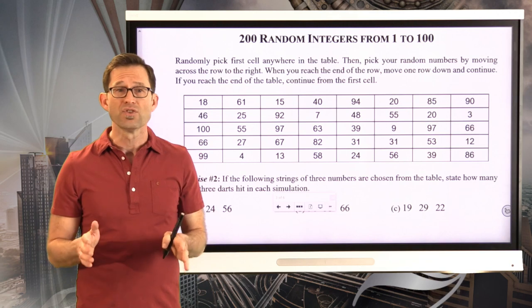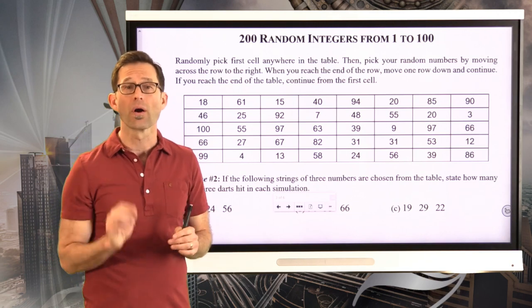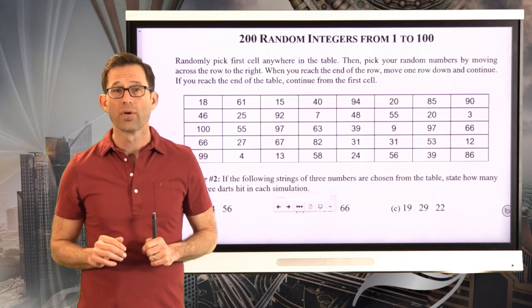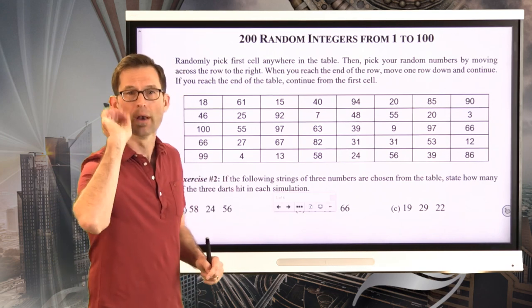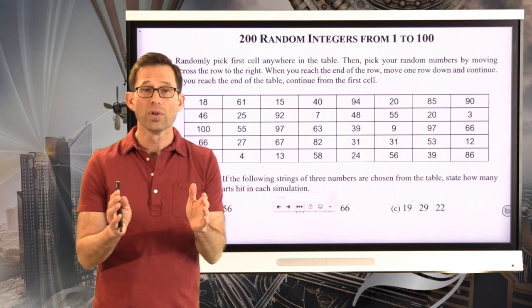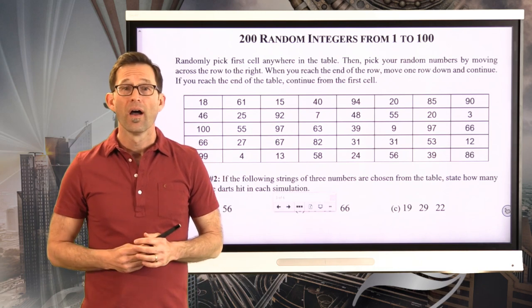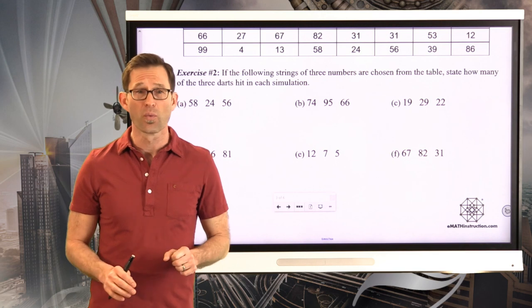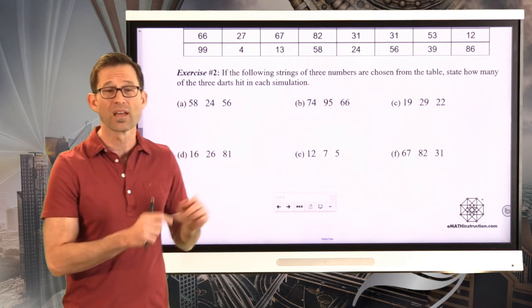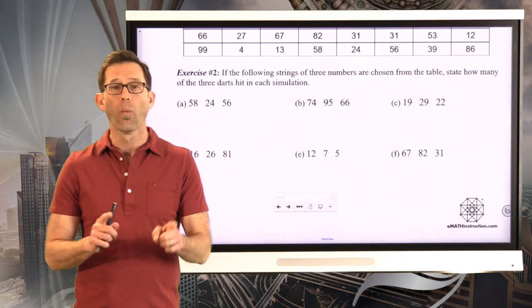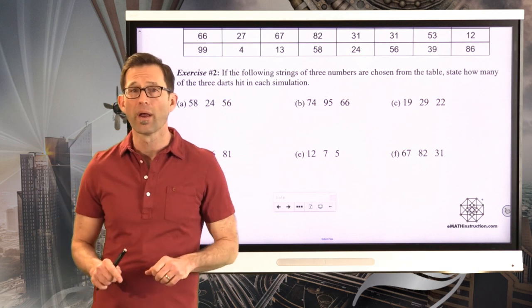Any number from 31 to 100 represents a miss. Now we're going to throw three darts. One, two, three. So eventually we're going to pull off three numbers from this table. And it's really imperative that when you look at a set of three numbers, you know how many hits you got. So let's take a look at that in exercise number two. Exercise number two is simply just make sure you know how to read a set of three numbers from this table. If the following strings of three numbers are chosen from the table, state how many of the three darts hit in each simulation. Remember, anything from 1 to 30 is a hit, and anything from 31 to 100 is a miss.